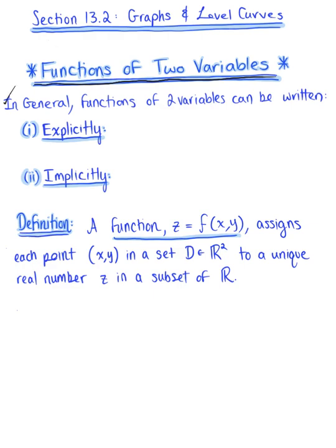In general, functions with two variables can either be written in explicit notation or implicit notation. A function defined explicitly will look like z is equal to f of x, y. Whereas an implicitly defined function will have the form F of x, y, z is equal to 0.